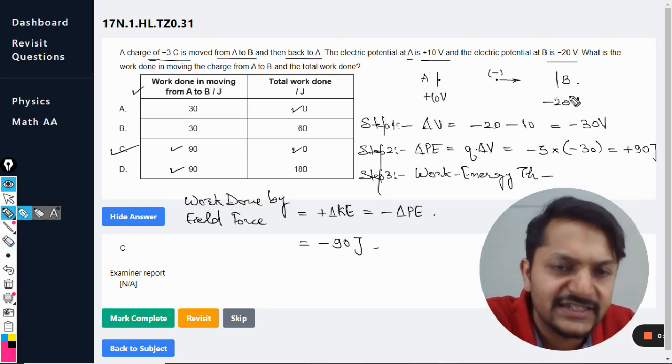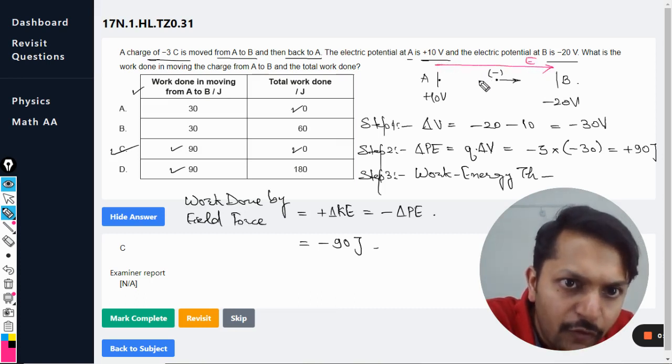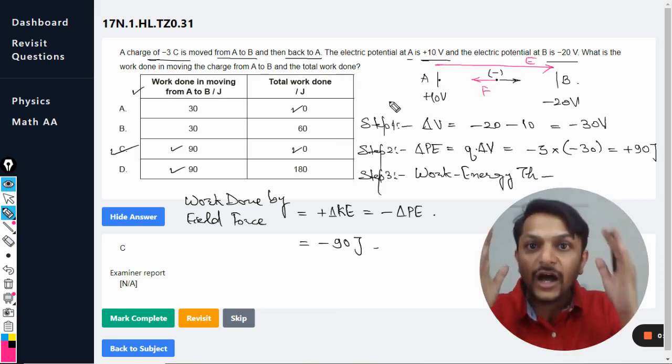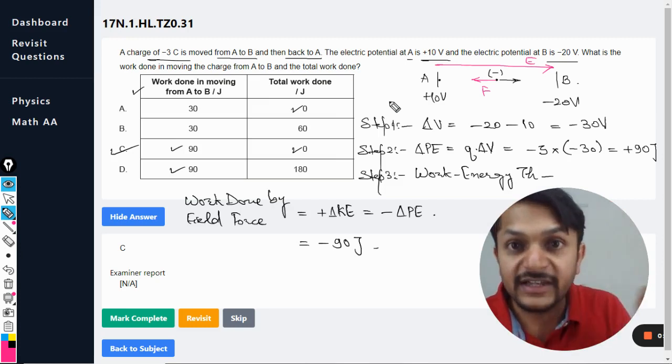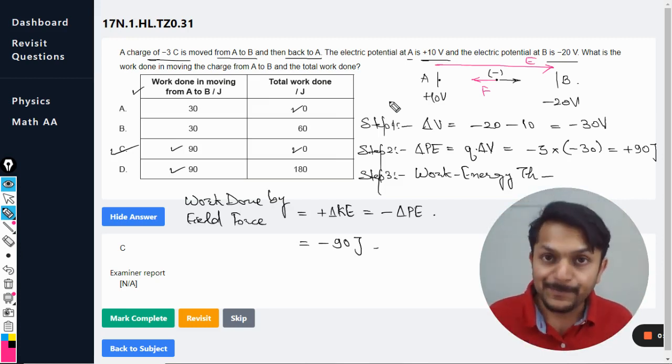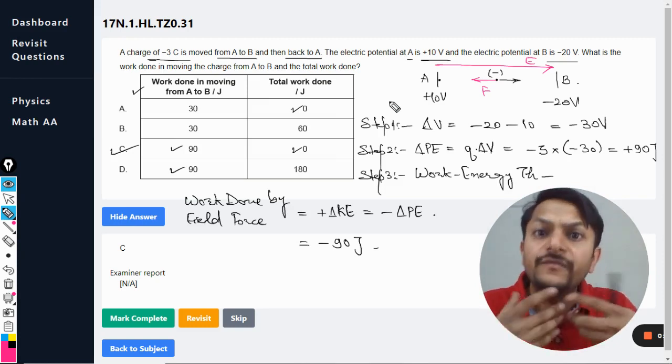The field force is acting on it, how? You see this is positively charged, this is negatively charged, electric field is moving like this. Obviously it is being acted upon by a force in the opposite direction, so work done by the field is definitely negative, there is no doubt about that.